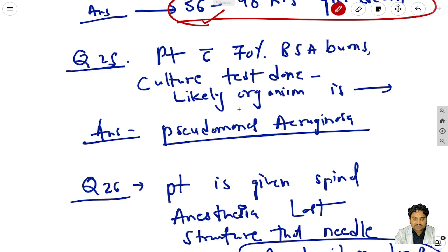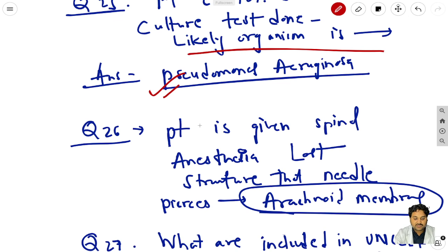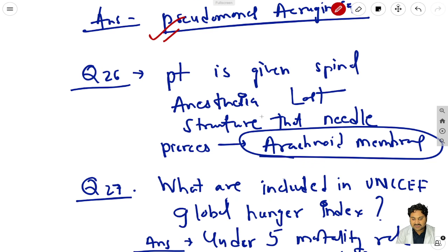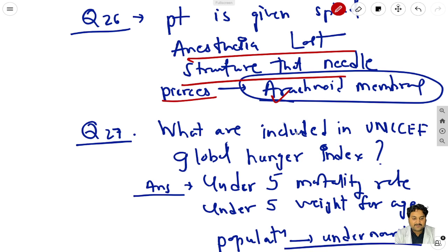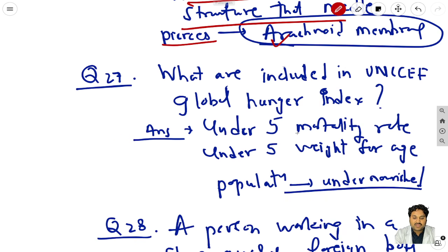Question 25: a patient with 70% BSA burns - the most likely organism on culture is Pseudomonas aeruginosa. Question 26: a patient is given spinal anesthesia - the last structure that the needle pierces is the arachnoid membrane. There are many one-word answer questions; the exam seems comparatively easier than last year.